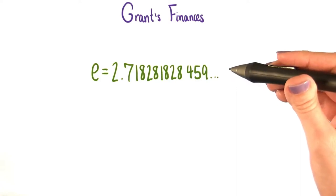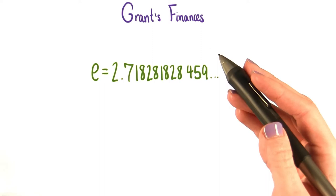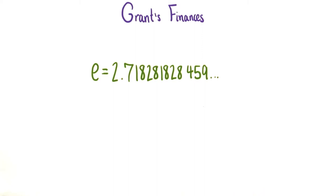Now that we know our value of e, or at least many digits of it, though not nearly an infinite number of them, we can see how those numbers we had on our table, introducing us to the idea of continuously compounded interest, definitely do approach this value. They were getting closer and closer to it as we moved on the list, as n got bigger.